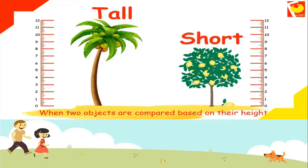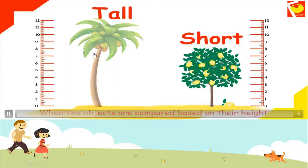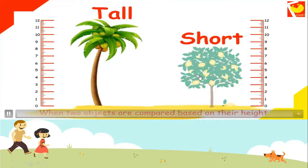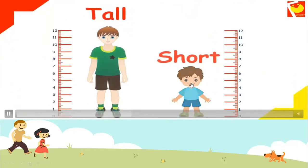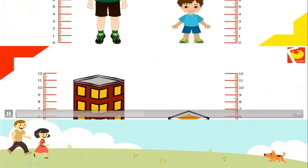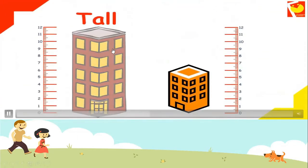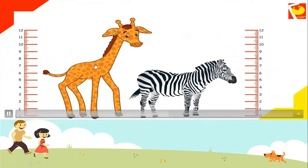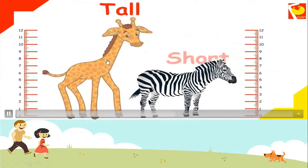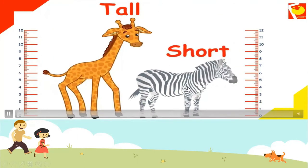For example, we have here a tall tree and a short tree. Now we have here a tall boy and a short boy. We have here a tall building and a short building. The giraffe is tall and the zebra is short.